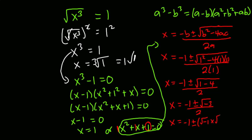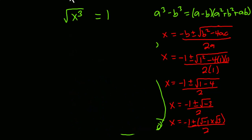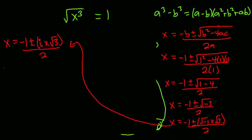We can break this down: the square root of negative 3 is the same as the square root of negative 1 times the square root of 3, all divided by 2. The square root of negative 1 is the complex root i, so this becomes negative 1 plus or minus square root of 3 times i, all divided by 2.